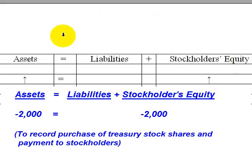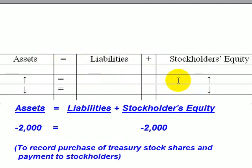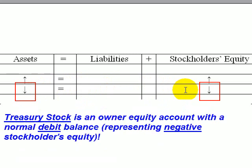Consider this illustration: assets equal liabilities plus owner equity. When investors make contributions to the corporation in exchange for stock, cash assets go up and stockholders' equity goes up. What's happening now is cash is being paid out to the stockholders, so their equity in the business has to fall. We're crediting cash to record the payment to the stockholders, and the debit goes to the treasury stock account. This treasury stock account represents stockholders' equity — it's a contra account to retained earnings, and the debit balance represents a decrease in retained earnings when cash is paid to the stockholders.